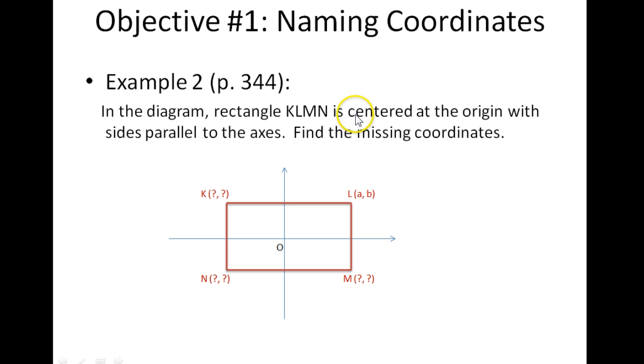This says rectangle KLMN is centered at the origin. That tells us that we can use the coordinates from L and recognize that they are going to be equidistant from the origin because the rectangle is centered at the origin. Let's do this step by step. We know that L has coordinates A and B.